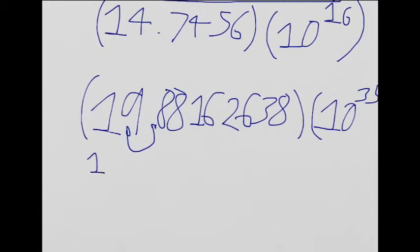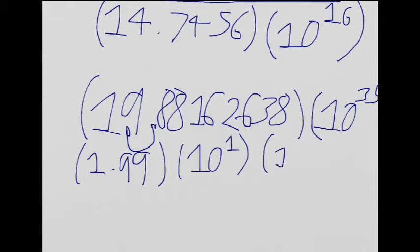So I get 1.9, well it's going to be rounded to 3 significant figures. So I'm just going to do that now: 1.99 times 10 to the first times 10 to the 19.